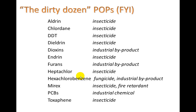This is a list of the dirty dozen POPs — persistent organic pollutants. DDT is on this list, and many of them are insecticides. Dioxins are another major one, which is an industrial byproduct. PCBs are an industrial chemical used for a variety of purposes, many related to the electronics industry.